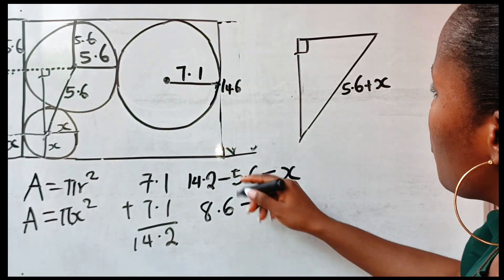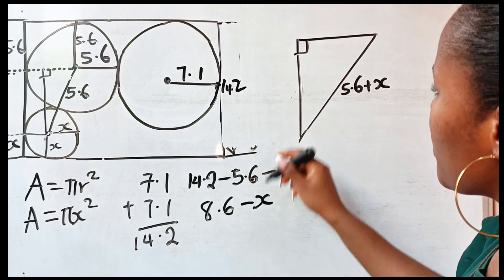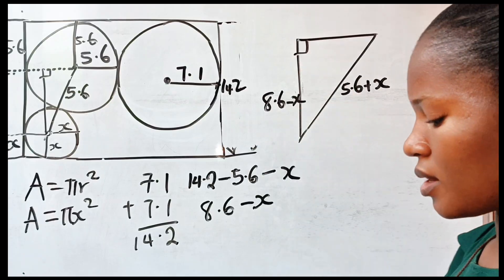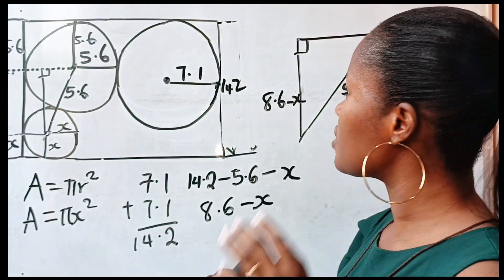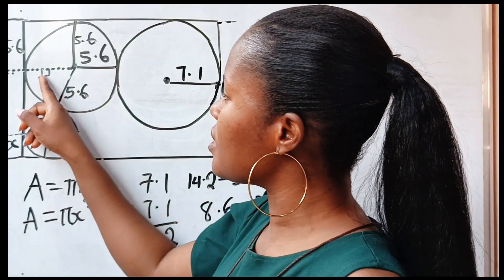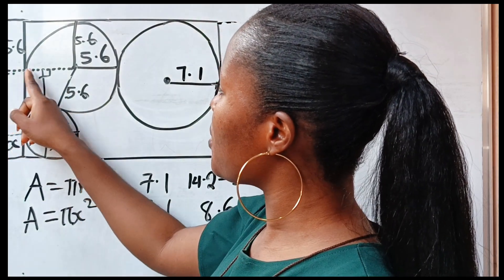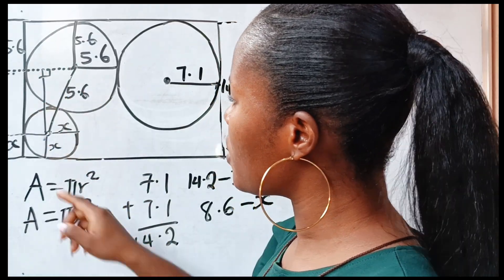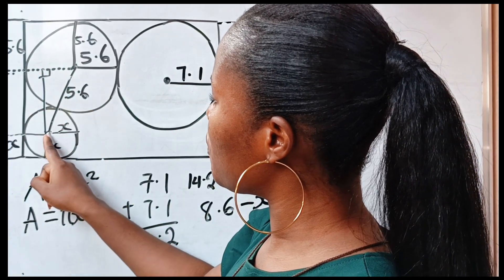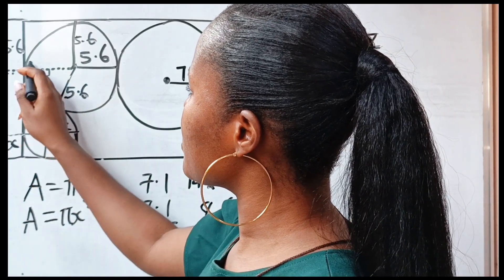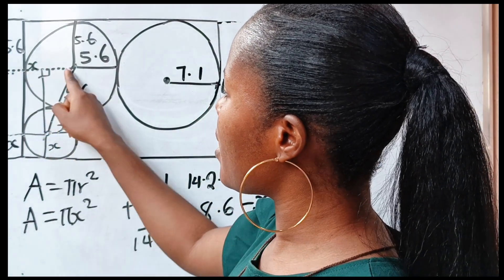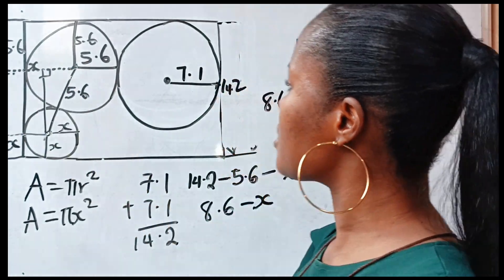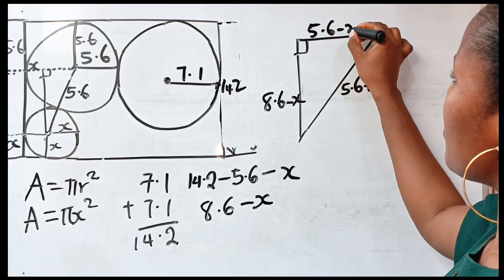This is 14.2. So from here to here is 8.6 minus x. Now I want to use the Pythagorean theorem to solve this. From here to here is 5.6, and if you take from here to here, this is the radius of the small circle, which is x. So the remaining side is going to be 5.6 minus x. And I think I've gotten all I needed.